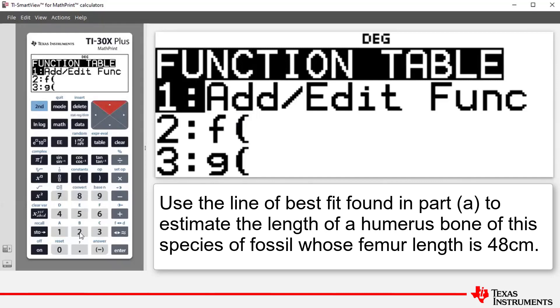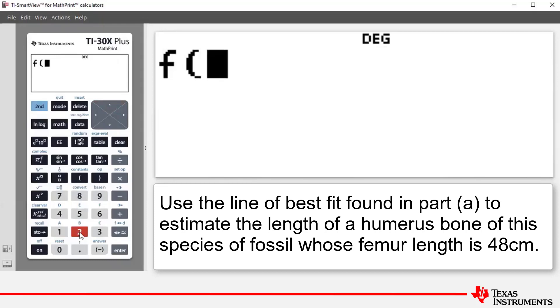So we want to paste F open bracket onto the home screen. What we want to do now is we want to enter the value 48 and press the close bracket key. So what that is signifying is that we're estimating the length of a humerus bone whose femur length is 48.